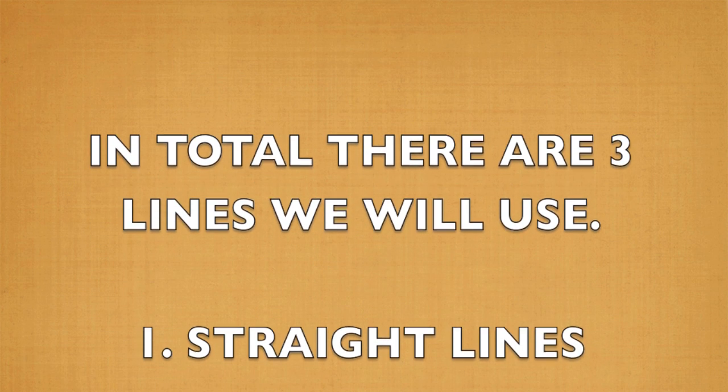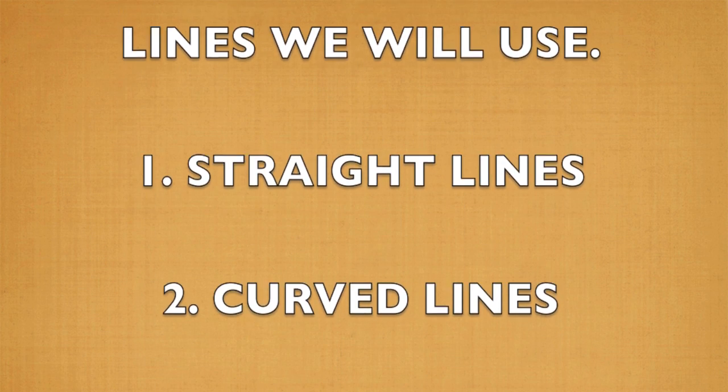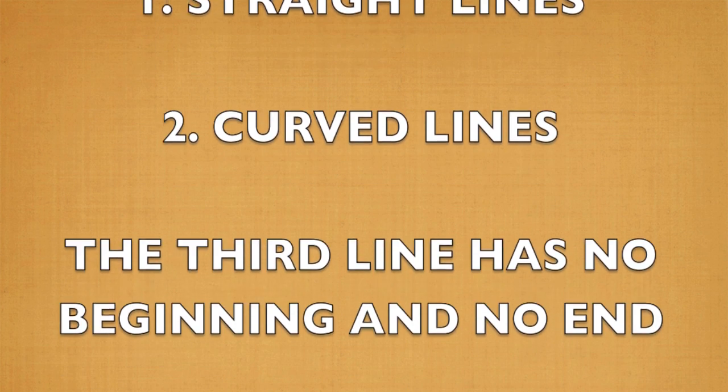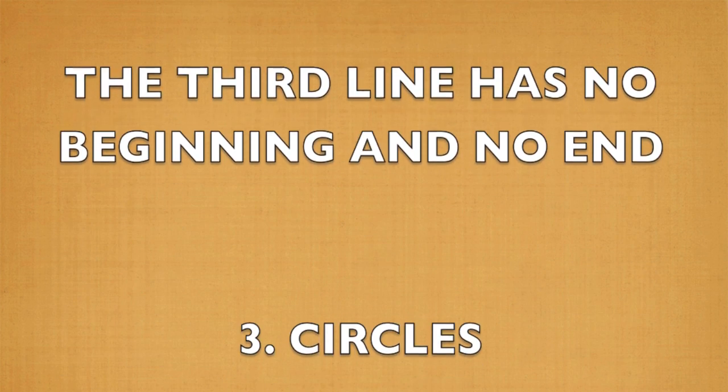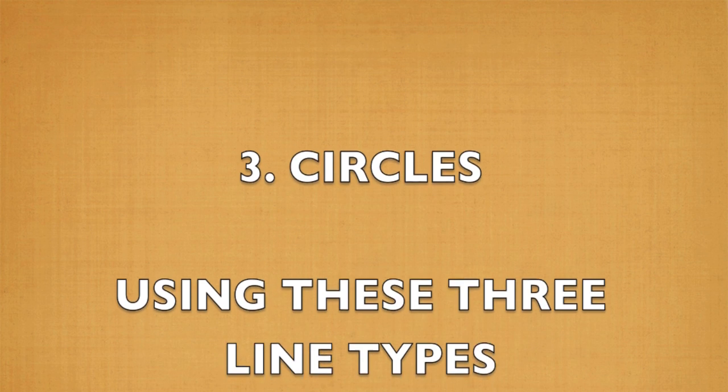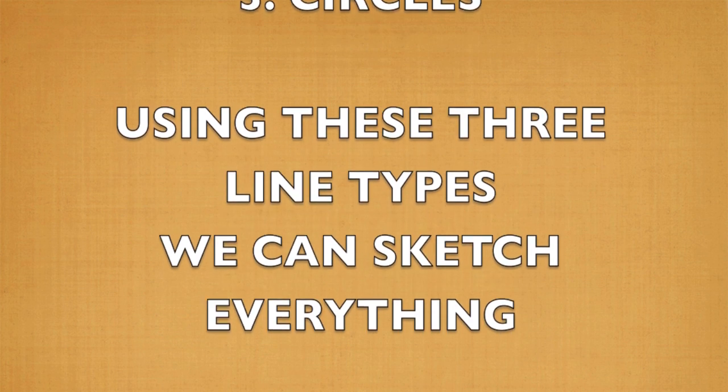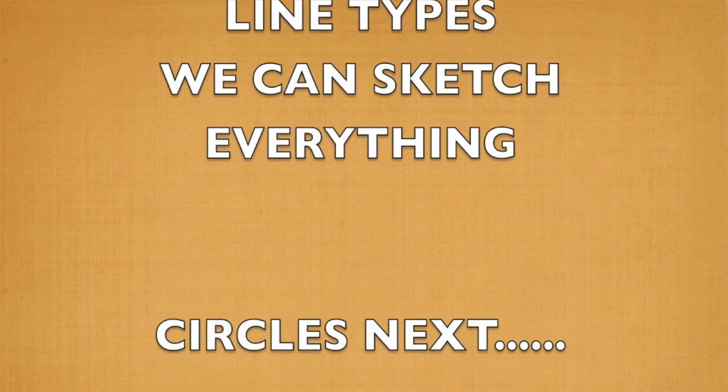In total, then, there are three lines you'll use. Straight lines, keeping them straight as you checked earlier, and curved lines. You've seen how the natural wrist movement helps with that. And the third one is circles. We're going to look at those three line types. We can sketch just about anything. So the next video, hopefully, a little bit on circles. Hope that helped.